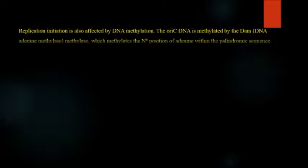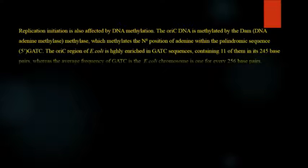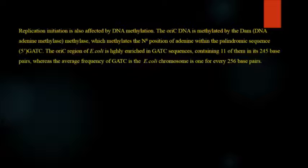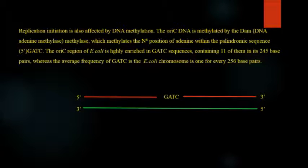Replication initiation is also affected by DNA methylation. The OriC region in DNA gets methylated by the DAM which is DNA adenine methylase. It methylates at the N6 position of adenine. There are about 11 of them in its 245 base pairs of E. coli whereas the average frequency of GATC in the E. coli chromosome is 1 for every 256 base pairs.